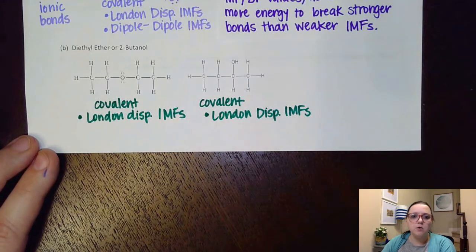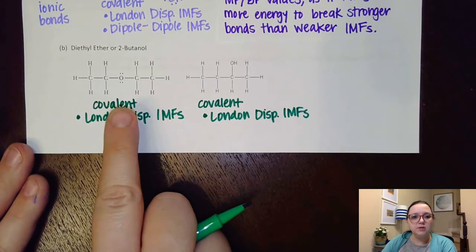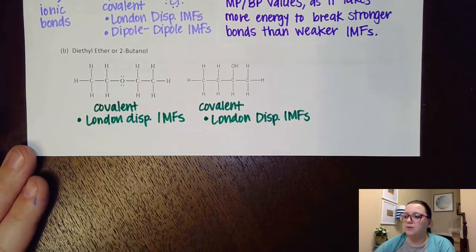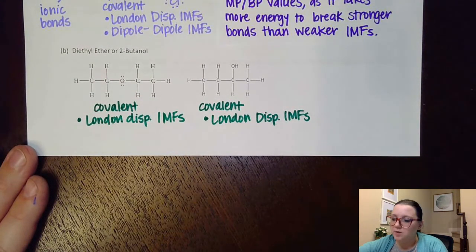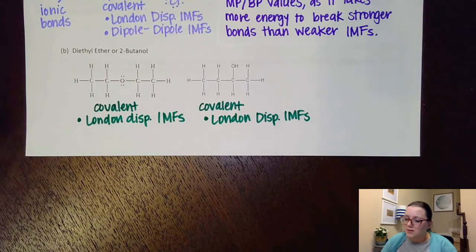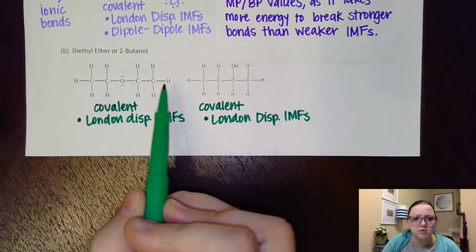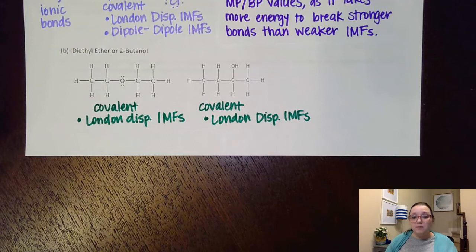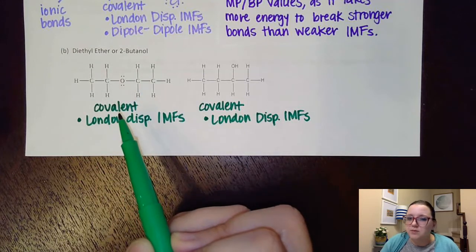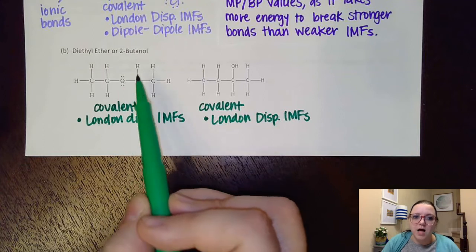And then I would ask myself, are they polar or non-polar? That's where it gets a little tricky for the diethyl ether. A lot of people get confused on whether or not it's polar or non-polar, because at first glance, it looks symmetrical. However, keep in mind that the way they drew this is all in a line, but this molecule really isn't all in a line.